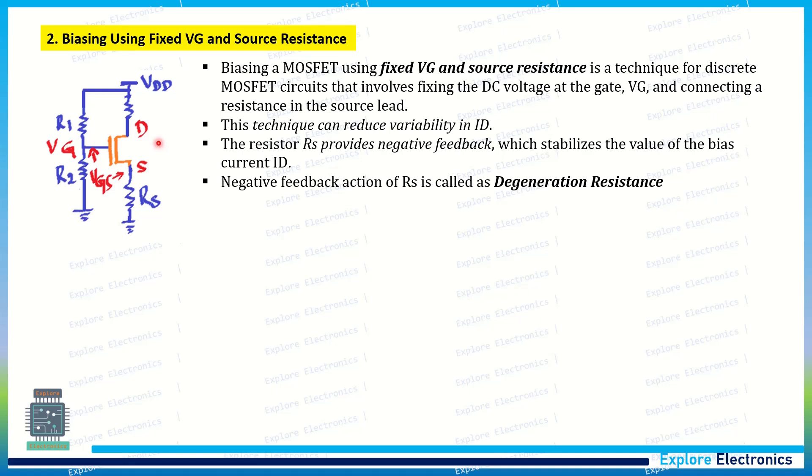Let us understand this clearly using an expression for VG. VG can be written as VGS plus RS times ID. VG is the gate voltage that equals VGS plus RS times ID. If you look at this expression, here VG is constant and we are expecting this ID is constant and RS is constant. VGS is variable. VGS is not constant here.